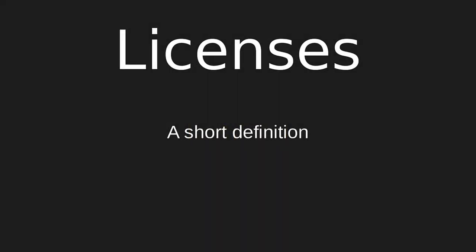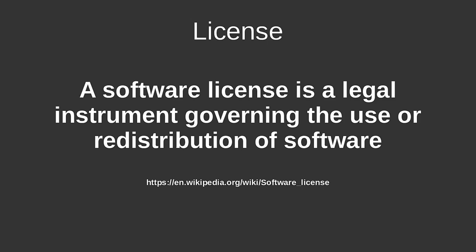Welcome to the next episode in our Licensing and Copyright series. We've been looking at copyright and the history of copyright, and now we're diving into licenses. We need to start defining a license. If you look at Wikipedia, it says: a software license is a legal instrument governing the use or redistribution of software.